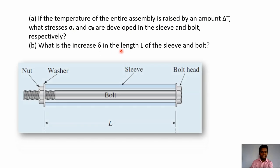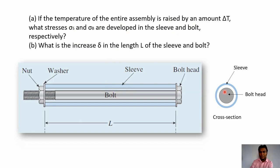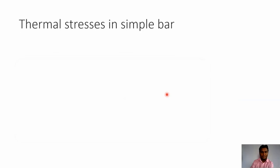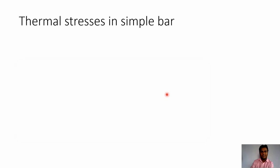If we draw the cross-section of this assembly, we find that there is a solid cylinder inside and outside there is a hollow cylinder, that is the sleeve. It is fixed at both ends by fixed supports. Since it is rigidly fixed at both ends, we can say this is a composite bar. Before studying thermal stresses in composite bars, let us quickly revise thermal stresses in a simple bar.